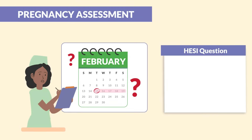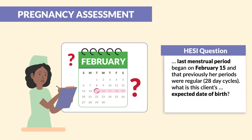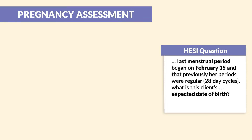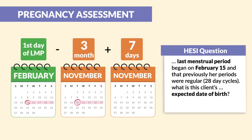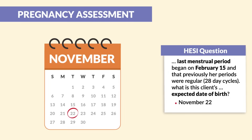Hesse also had three questions; here's one of them. A client states her last menstrual period began on February 15th, and previously her periods were regular 28-day cycles. What is this client's expected date of birth? February 15th minus three months is November 15th, then add seven days — so the correct answer is November 22nd.